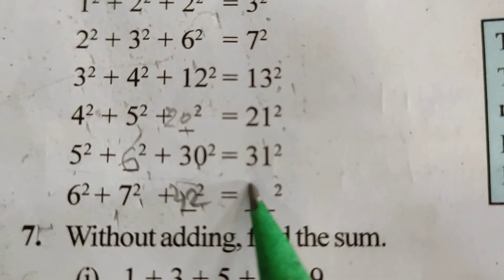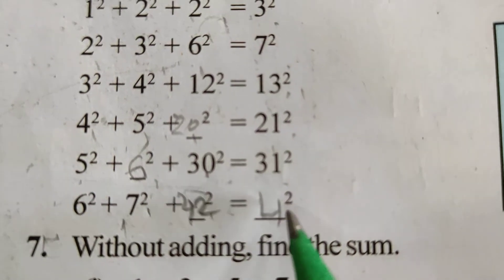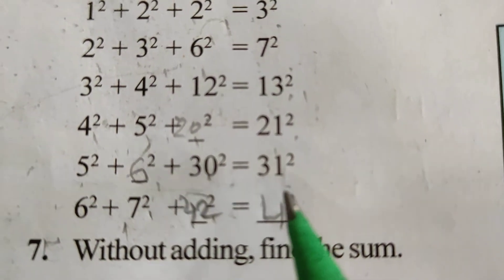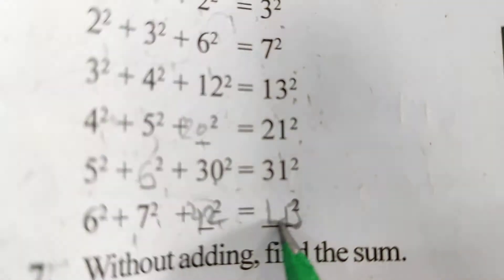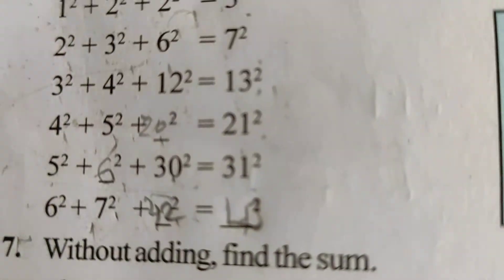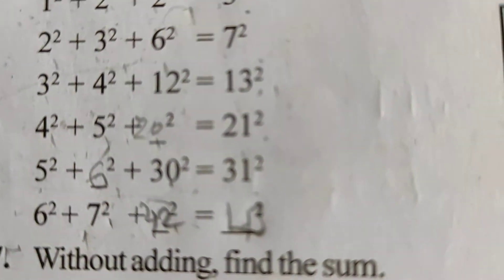The previous number will be after 43, so 43 squared will be there.